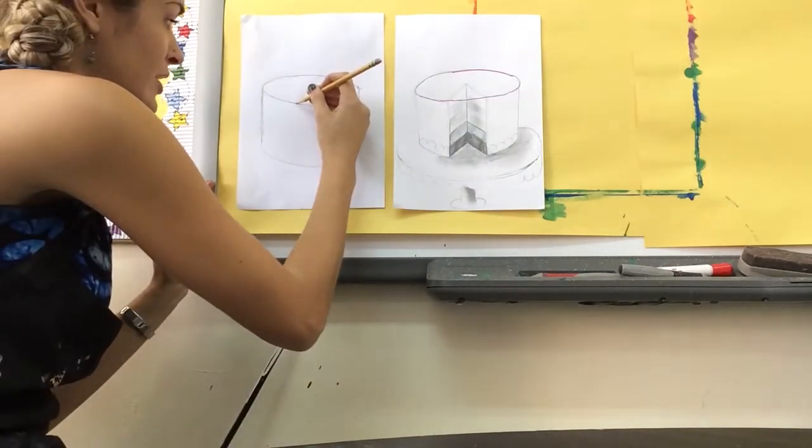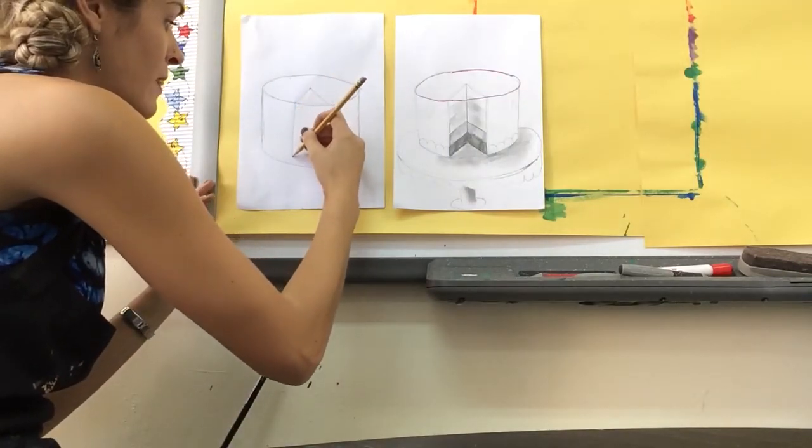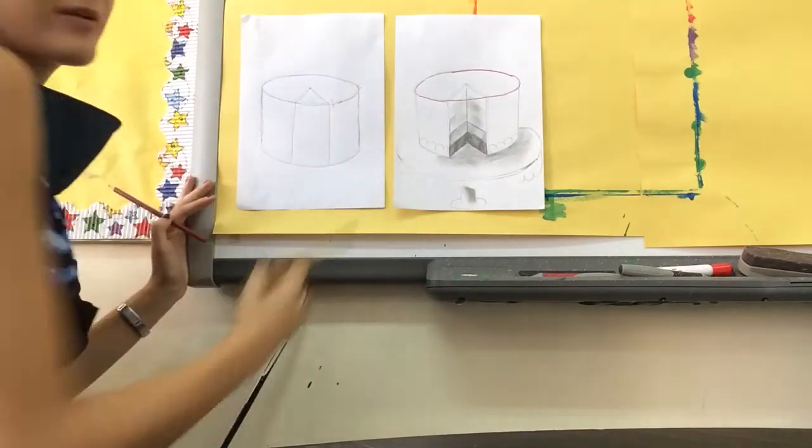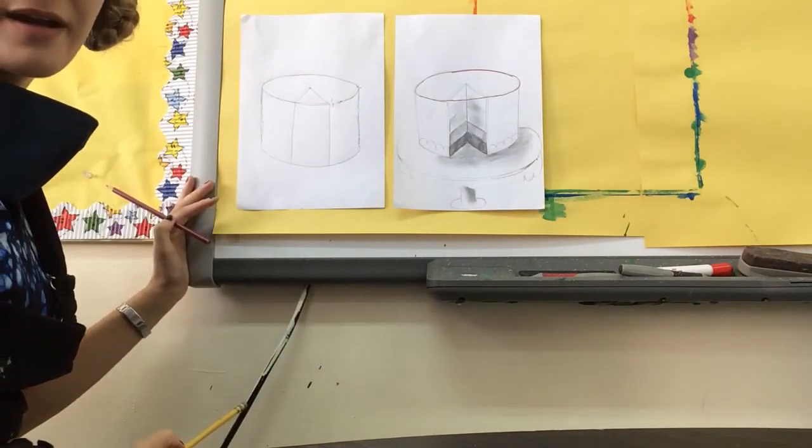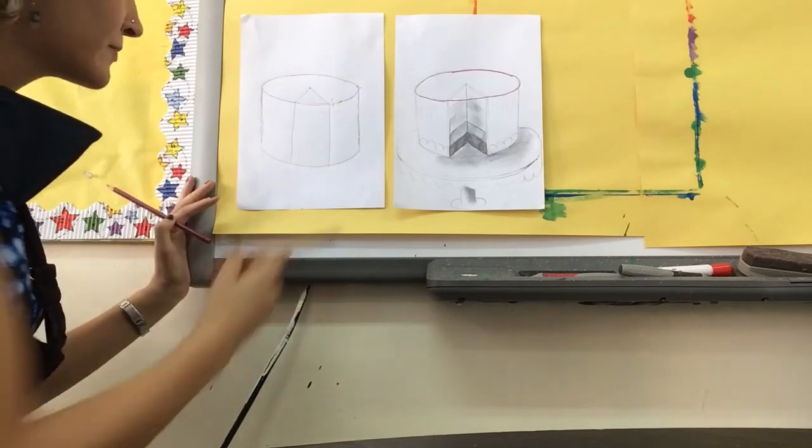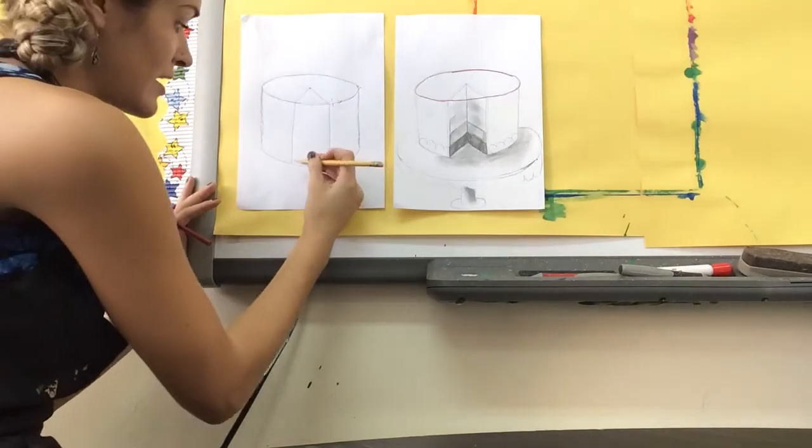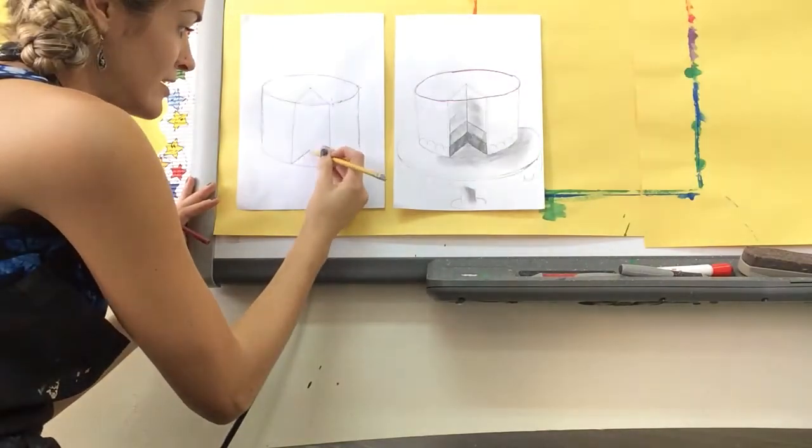Now I'm going to come straight down like this. From the bottom of the cake, I'm going to make a diagonal line in like that, and I'm going to make another diagonal line in to meet it.